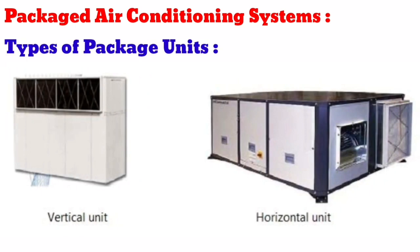The evaporator and condenser are kept together in one package, delivering conditioned air directly into a room or duct work. Three main types of package units are distinguished by their mounting and blowing capability: vertical package, horizontal package, and rooftop. Vertical package units blow air horizontally or vertically upwards — the lower section contains the compressor, condenser, and condenser fan, while the upper section contains the cooling coil and blower. Horizontal package units blow air horizontally, with typical cooling capacity ranging between 3 and 20 tons.